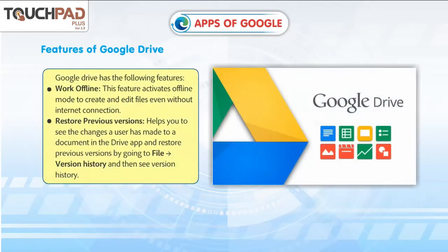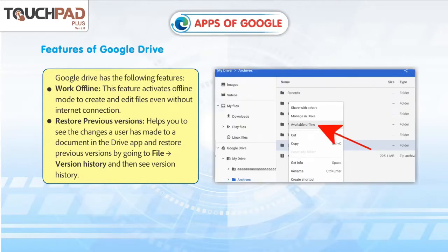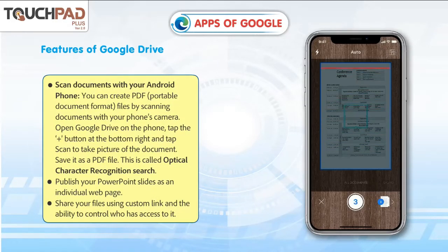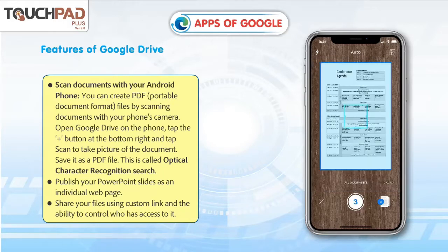Features of Google Drive. Work Offline: this feature activates offline mode to create and edit files even without an internet connection. Restore Previous Versions: helps you to see the changes a user has made to a document in the drive app and restore previous versions by going to File, then Version History, then See Version History. Scan documents with your Android phone: you can create PDF (portable document format) files by scanning documents with your phone's camera. Open Google Drive on the phone, tap the plus button at the bottom right, and tap Scan to take a picture of the document. Save it as a PDF file.